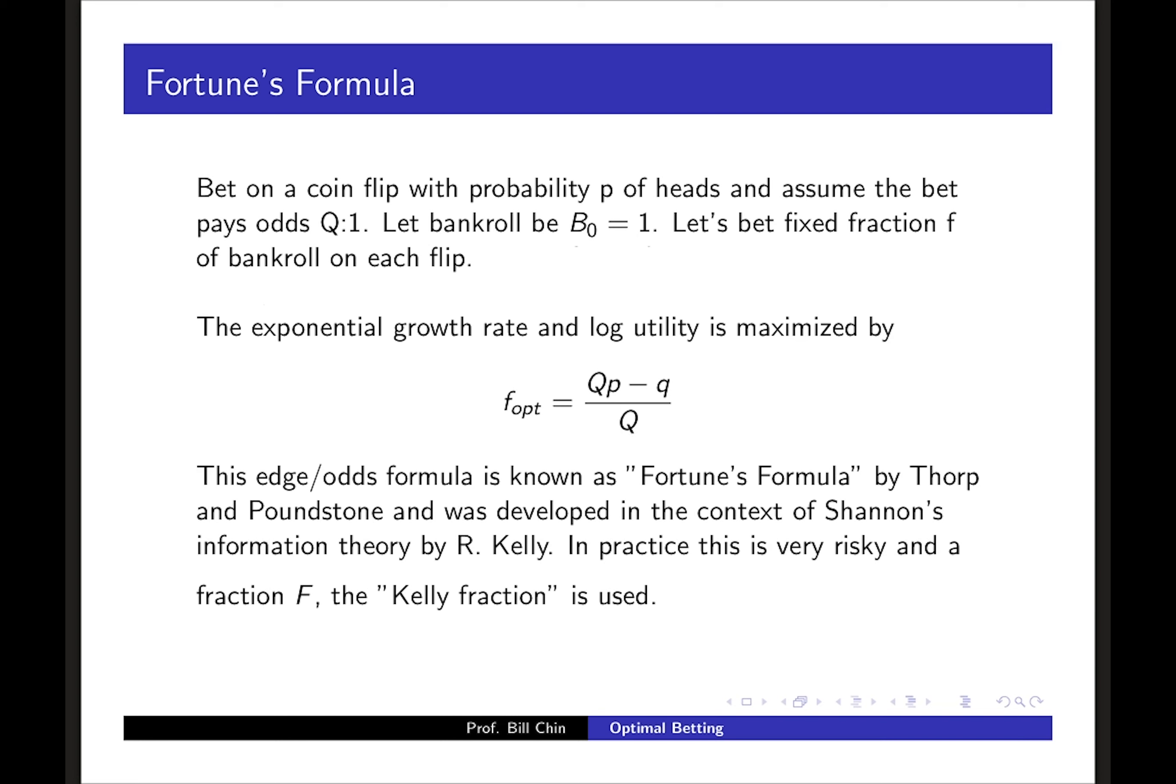It's called fortune's formula tongue-in-cheek by Thorp the inventor of card counting in blackjack, and the book by Poundstone about card counting and advantage gambling in general, and it was developed in the context of the information theory of Claude Shannon done by R. Kelly at Bell Labs.